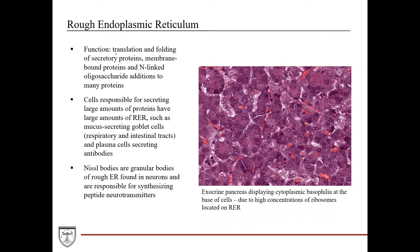The rough endoplasmic reticulum as a whole is responsible for translation and folding of secretory proteins. The proteins are synthesized or translated by the ribosomes, but then within the rough ER they undergo further folding and processing. They also synthesize membrane-bound proteins and N-linked oligosaccharide additions to many different proteins. Cells that are responsible for secreting large amounts of proteins have large amounts of rough ER, which corresponds to the cellular function.